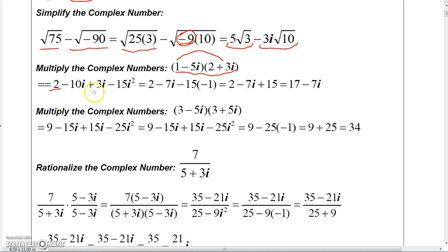Looks like I did that backwards, but anyway, the inner product would be -5i times 2, which is -10i. And then the last times the last would be -5i times 3i, which is -15i².